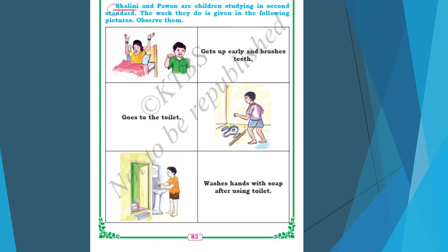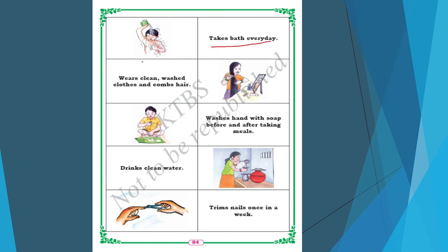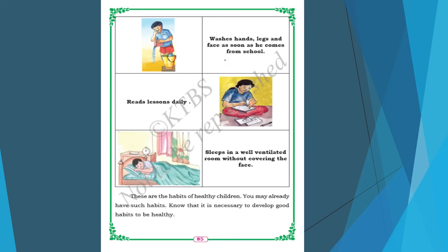Now there are two persons — Shalini and Pawan — children studying in second standard. The work they do is shown in the following pictures. Whenever they get up, they brush their teeth. Then they go to the toilet. After coming out they wash their hands with soap. Then they take a bath every day, wear clean washed clothes, comb their hair, and wash hands with soap before and after meals. They drink clean water, trim nails once a week, and wash hands, legs and face as soon as they come from school.